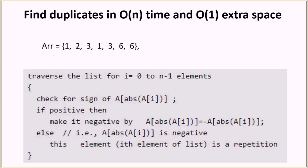To solve the problem in O(n) time complexity and O(1) extra space, we linearly traverse the array from zero to n minus one. We check the sign of the value at the index given by the absolute value of array[i]. For example, if index i is zero and array[i] is one, the absolute value of one is one. If we had minus one, the absolute value would still be one — the absolute value just removes the negative sign.